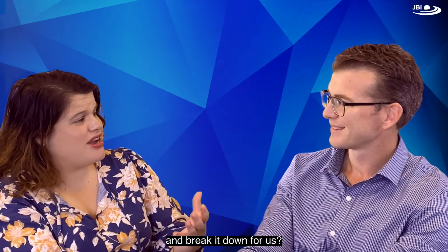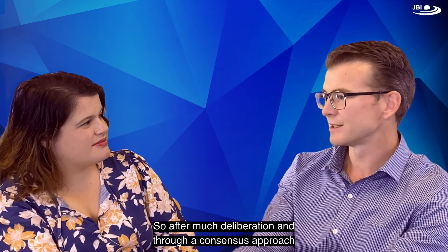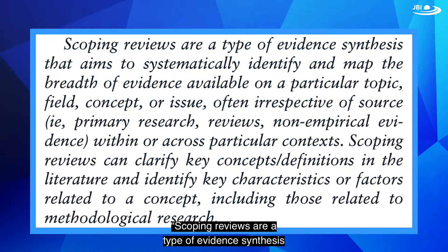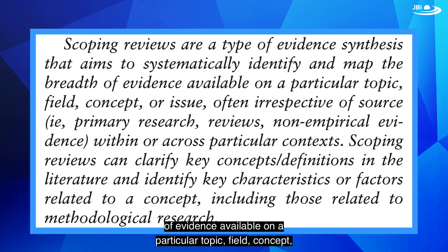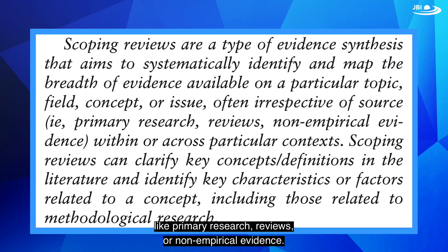Can you tell us the definition and break it down for us? After much deliberation and through a consensus approach with the JDI scoping review methodology group, we ended up with the following definition: Scoping reviews are a type of evidence synthesis that aim to systematically identify and map the breadth of evidence available on a particular topic, field, concept or issue, often irrespective of the source — so primary research, reviews, or non-empirical evidence.